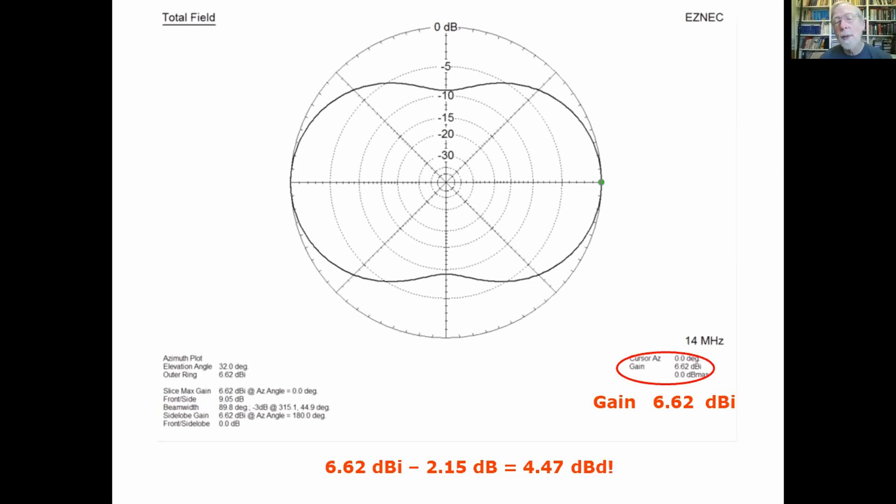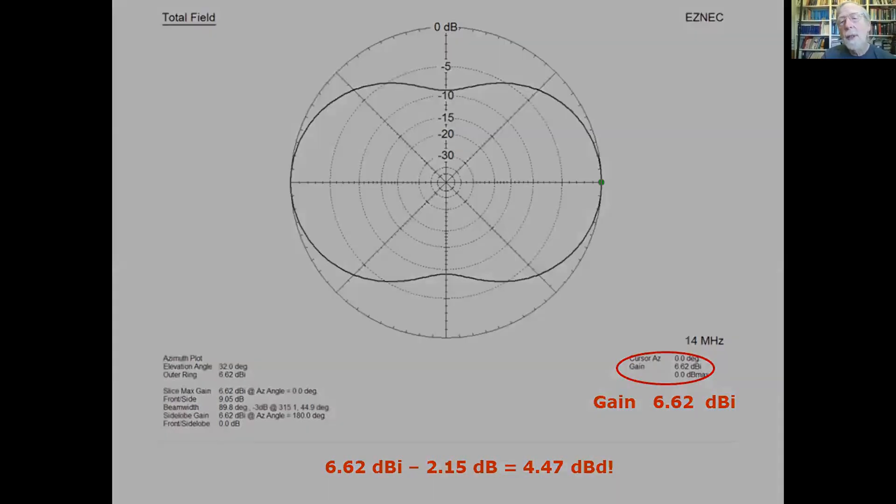This is why dBd is a kind of a tricky measure, a tricky reference to use. You should be very careful using it or when somebody else uses it. It's appropriate for example for a yagi, so long as you are referencing not a dipole in free space but a dipole in the same environment as the yagi. If you want to know the gain of a yagi relative to a dipole, what you should do is model the dipole at the same height over the same ground and then you put in your yagi and you measure its gain and the difference is the gain relative to a dipole. You don't just subtract off 2.15 dB or add on 2.15 to get your number - you'll get results that are meaningless.